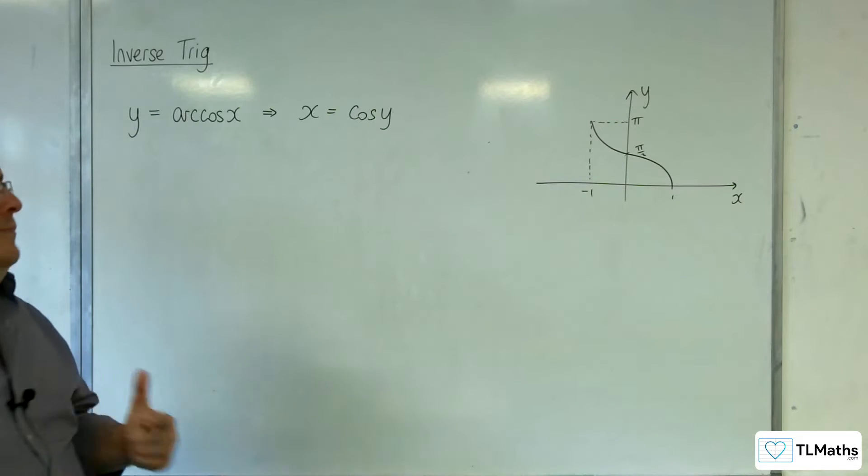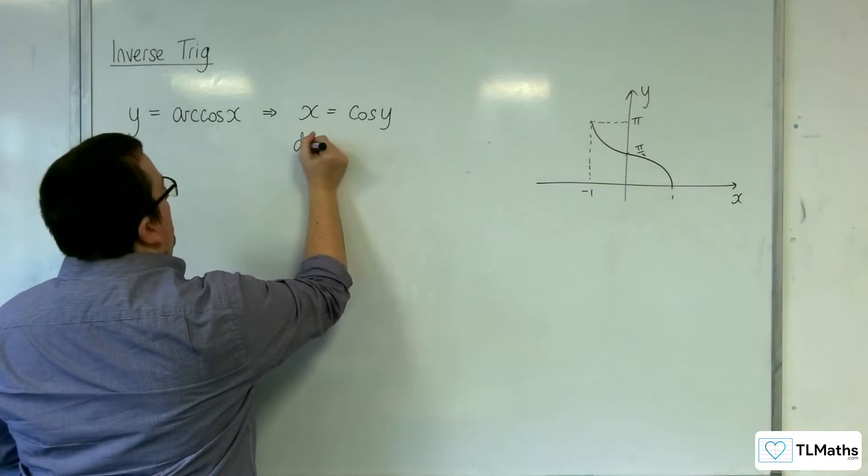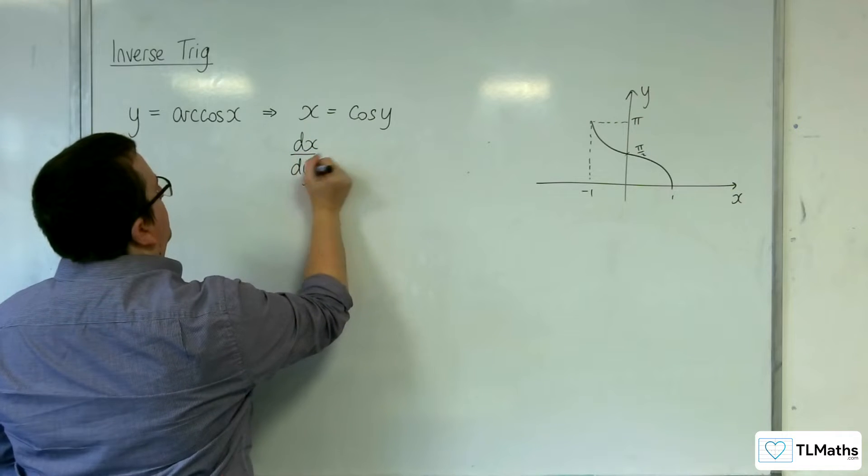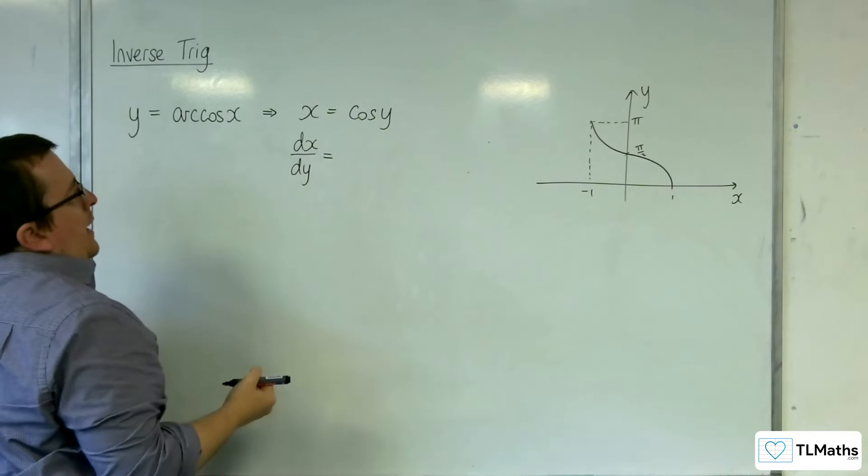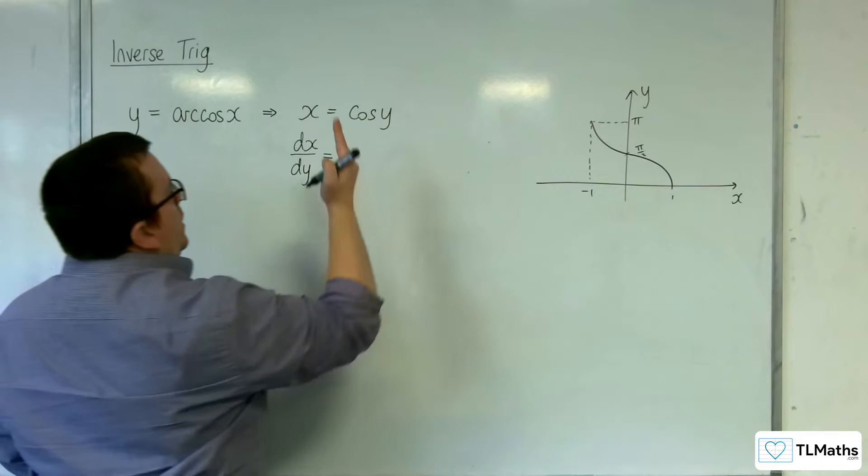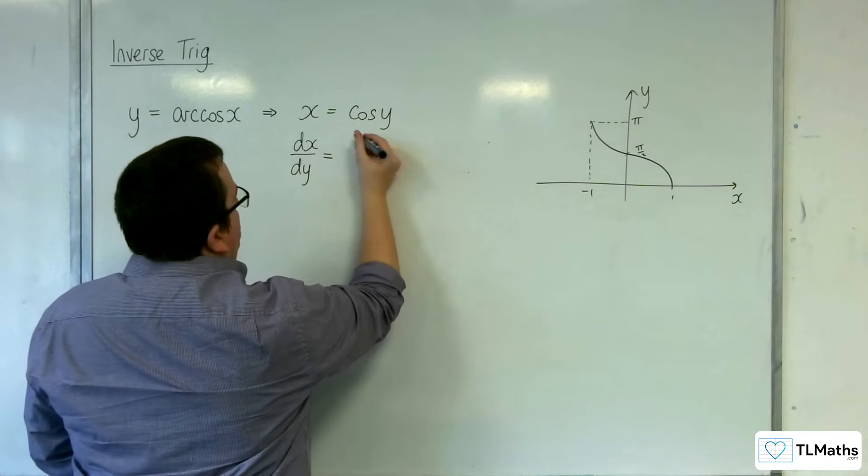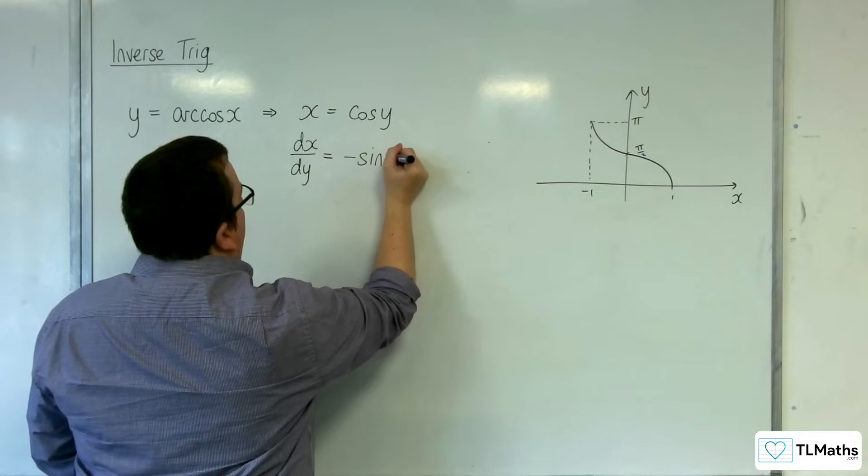And then differentiate both sides with respect to y. So dx by dy is going to be equal to... cosine y differentiates to minus sine of y.